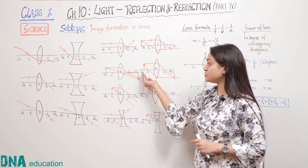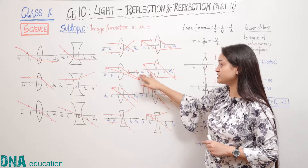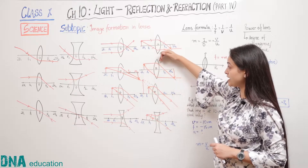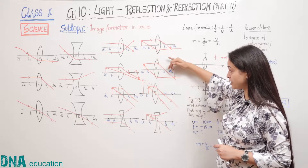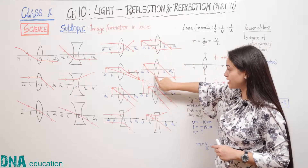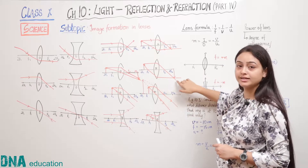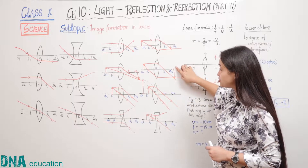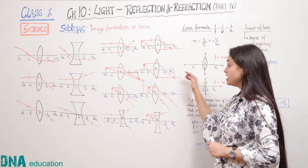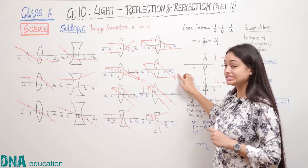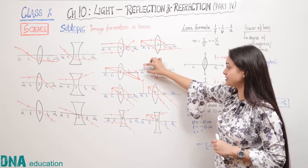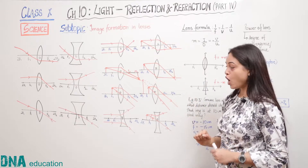The next case is when the object is placed between 2F1 and F1. We take a parallel light ray that emerges from focus and a light ray coming from focus that emerges parallel. The light rays meet beyond 2F2. The image is real, inverted and enlarged — that is, greater than the size of the object.